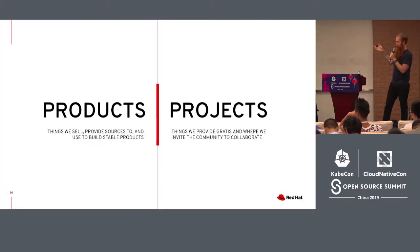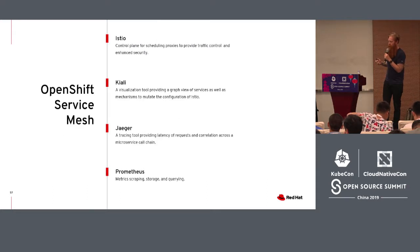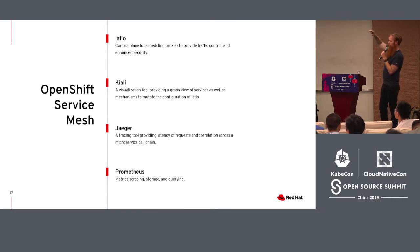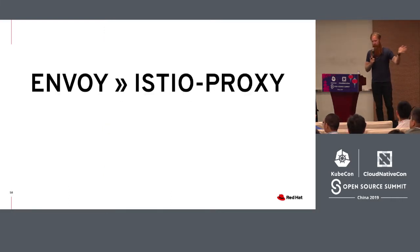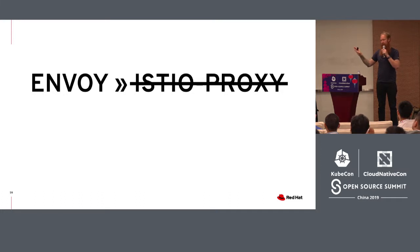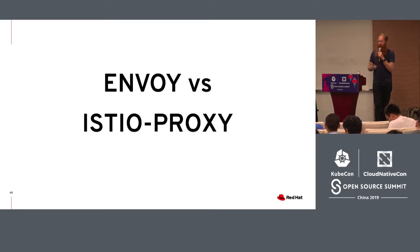At Red Hat, we have products and we have projects that we collaborate on. This is how we balance supporting the things that we sell as a company and the things we give away for free. This means every product has one or more upstreams. In the case of OpenShift Service Mesh, we compose a number of projects together: Istio, Kiali, Jaeger, Prometheus, et cetera. Envoy is the upstream for Istio Proxy, but Envoy is not Istio Proxy. It carries a patch set atop Envoy to create the component Istio Proxy.